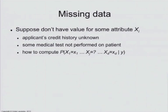The reason could be that some guy is applying for a loan and I just didn't record his credit history for some strange reason, or some medical test was not performed on this patient. So you have the full picture, but you don't have this medical test. So how do you deal with missing data?